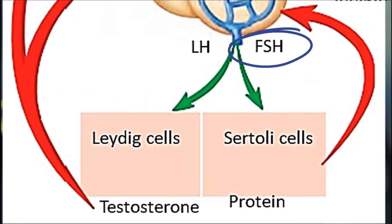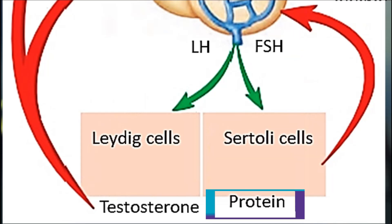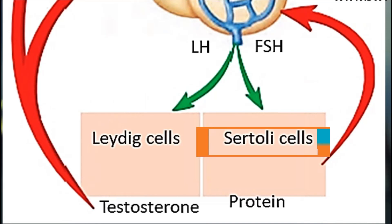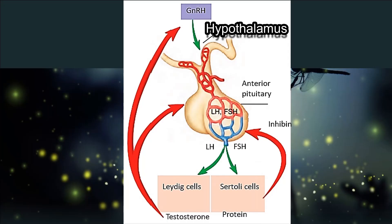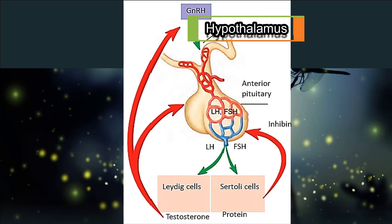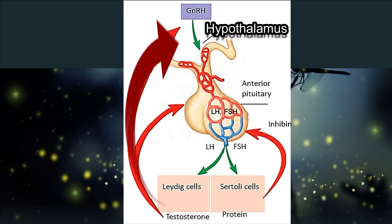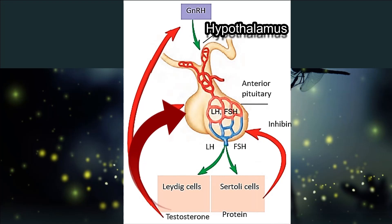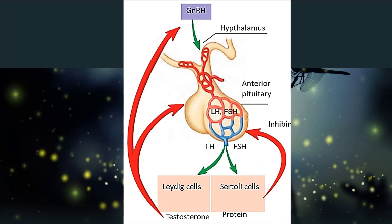FSH stimulates Sertoli cells to produce a protein that concentrates testosterone. Sertoli cells also cause the formation of primary spermatocytes from the stem cell spermatogonium. Regarding feedback inhibition: when sperm count is high, Sertoli cells release inhibin, which acts on the anterior pituitary gland to reduce the release of FSH. The hypothalamus also detects excessive testosterone levels in the blood, so it reduces its secretion of GnRH. In response, the anterior pituitary reduces its production of LH and FSH, resulting in a decrease in testosterone production by Leydig cells.